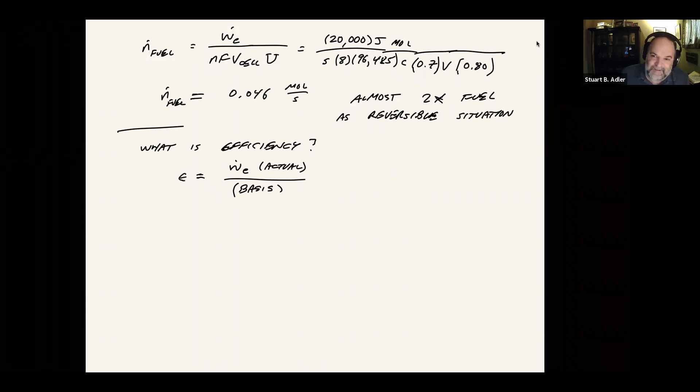Part of that all over the placeness comes from the numerator. Depending on the fuel cell and how it's operated, the stack configuration, the fuel utilization, and all these other factors, the amount of electrical work you get is going to vary. But the other thing that varies is what the denominator is, and people use different numbers to quote these efficiencies.